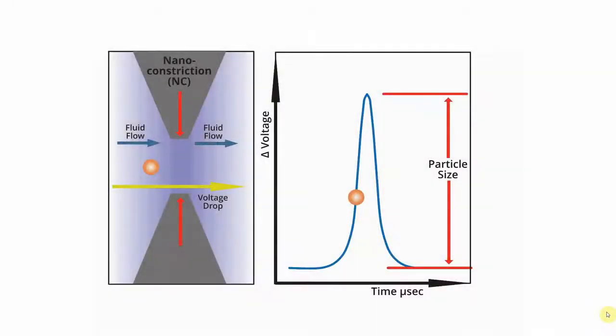As the particles transit the nanoconstriction, they create a change in electrical signal that's directly proportional to the volume of the particle, regardless of its shape and regardless of the material it's made of.